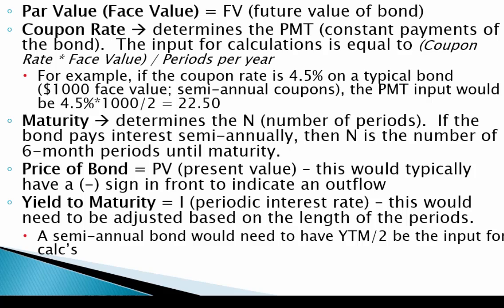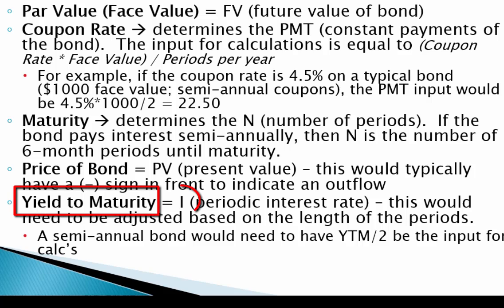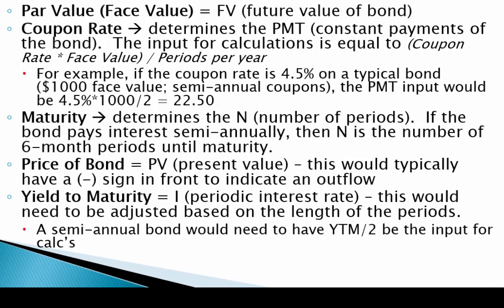If the bond pays interest quarterly, N would be four times the number of years until maturity. The price of a bond is the present value (PV), which typically has a negative sign to indicate an outflow when purchasing — in calculators and Excel, you must indicate this with a negative sign or you'll get errors. Finally, the yield to maturity equals the I input, the periodic interest rate, adjusted based on period length. For a semi-annual bond, the yield to maturity divided by two is the input for calculations.